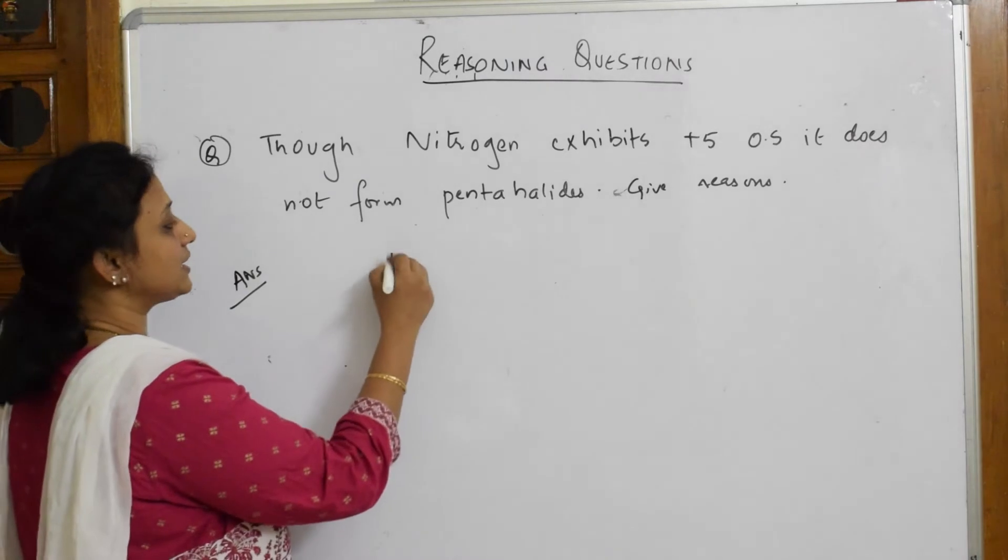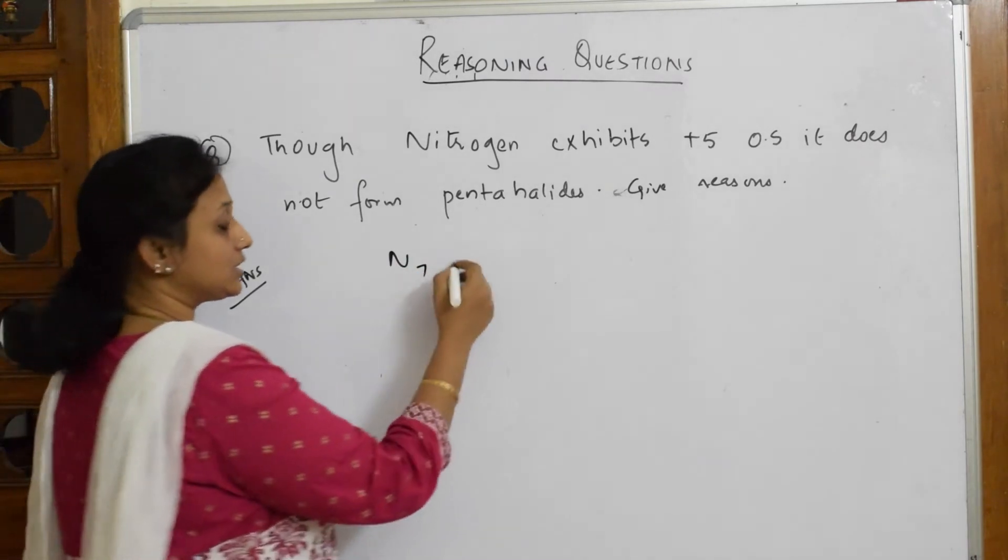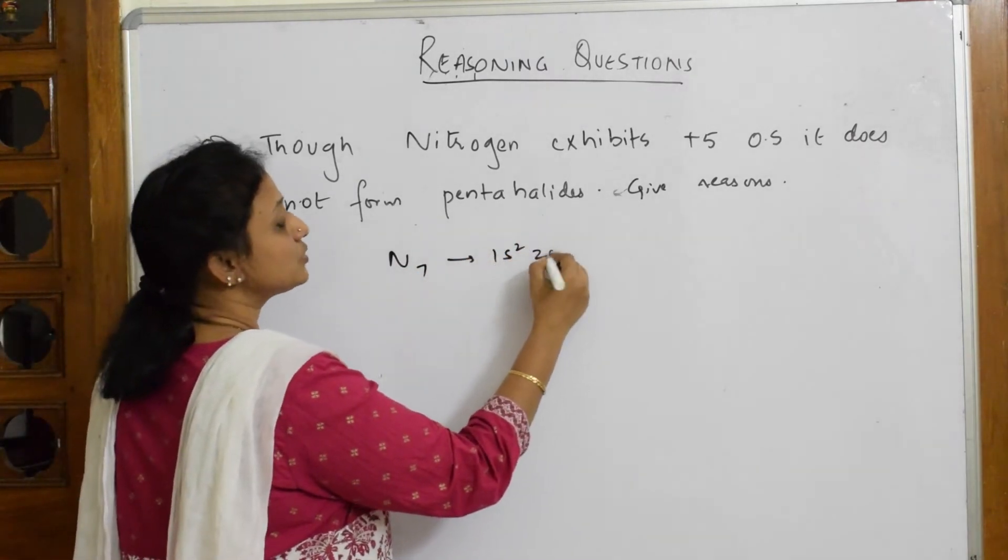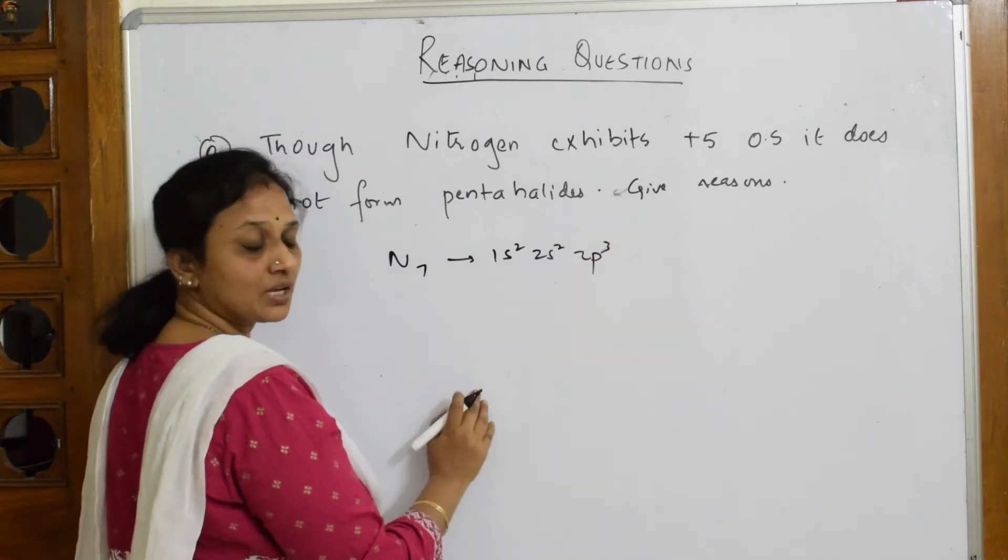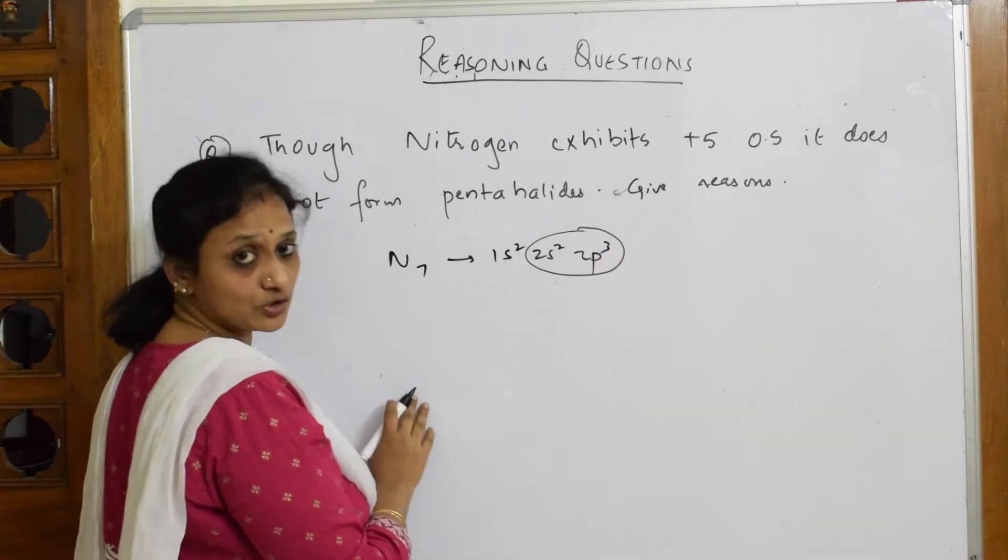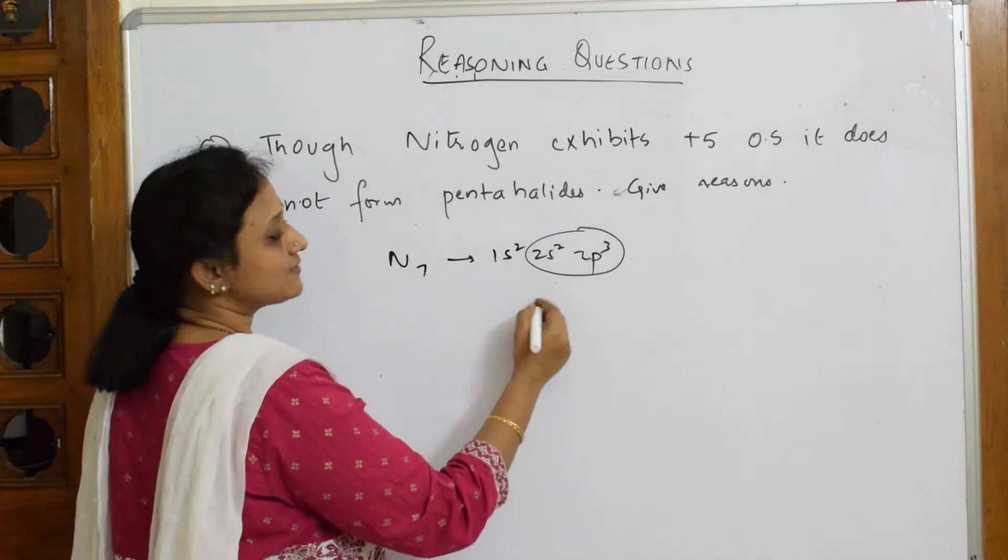Nitrogen has atomic number 7. The electronic configuration is 1s², 2s², 2p³. It has five electrons in the n=2 subshell, so it can extend its valence.